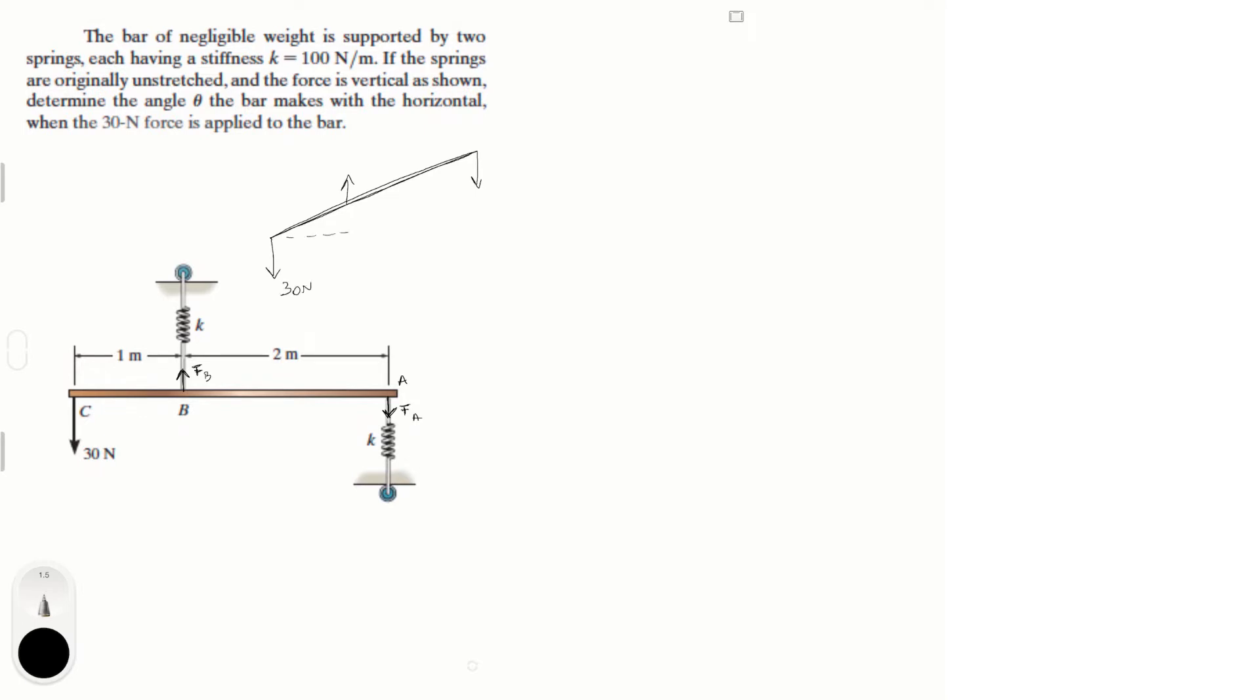The state that the bar is at is a state that looks somewhat like this, where this force is going down, there's a force here going up, and then we have 30 N here. And this is the angle theta that they want us to find. So this is the diagram that we should really be drawing when we're doing this problem.